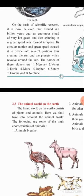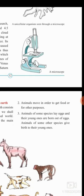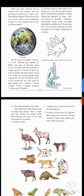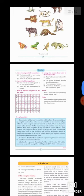3.3: The Animal World on Earth. The living world on the earth consists of many plants and animals. Here we shall take into account the animal world. The following are some of the main characteristics of animals: animals breathe; animals move in order to get food or for other purposes; animals of some species lay eggs and their young ones are born out of eggs; animals of some other species give birth to their young ones.